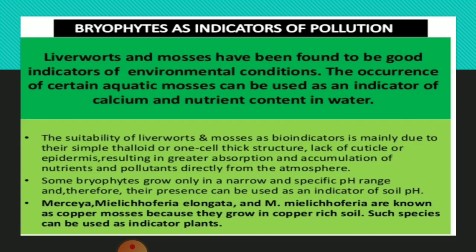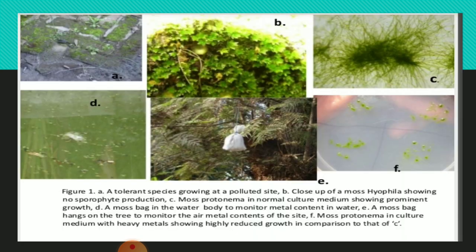Bryophytes as indicators of pollution: Liverworts and mosses have been found to be good indicators of environmental conditions. The occurrence of certain aquatic mosses can be used as an indicator of calcium and nutrient content in water. The slides show tolerant species growing at polluted sites, and a close-up of Myos hyophylla showing no sporophytic production due to pollutants — indicating pollution effects on reproduction.